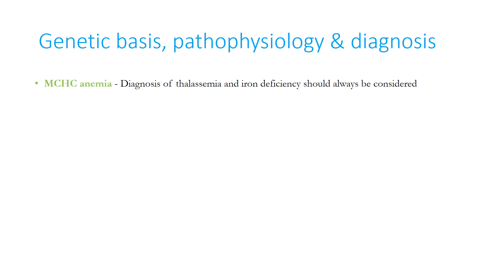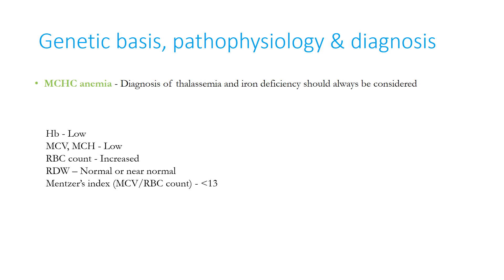The first recommendation by the Thalassemia International Federation is that in any case of microcytic hypochromic anemia, a diagnosis of thalassemia and iron deficiency should always be considered. Basic tests include hemoglobin (low), MCV, MCH, MCHC (RBC indices, also low), and RBC count (increased in thalassemia, decreased in iron deficiency anemia). Red cell distribution width (RDW) is normal or near normal in thalassemia but increased in iron deficiency anemia. Mentzer's index, calculated as MCV divided by RBC count, is less than 13 in thalassemia and more than 13 in iron deficiency anemia.